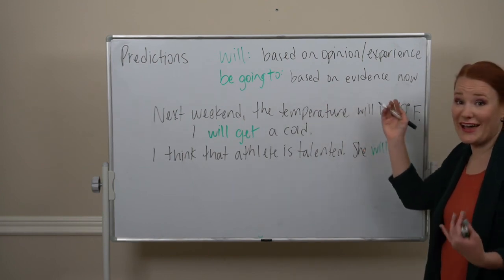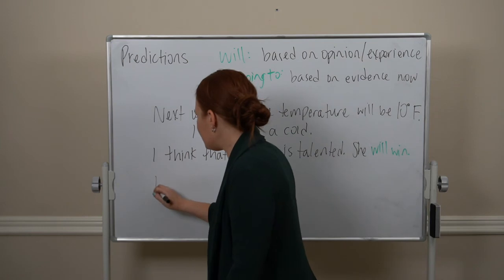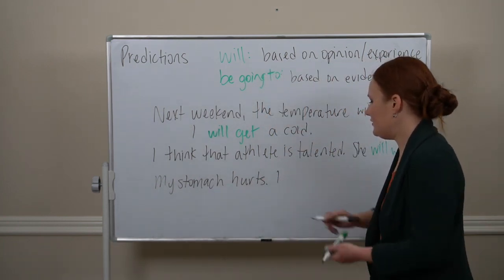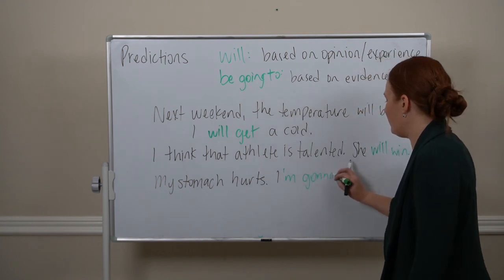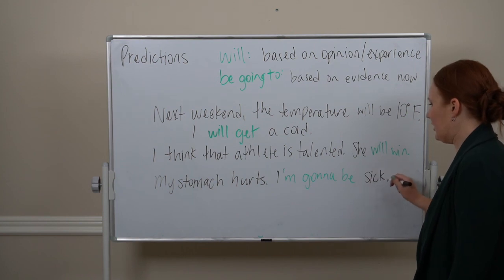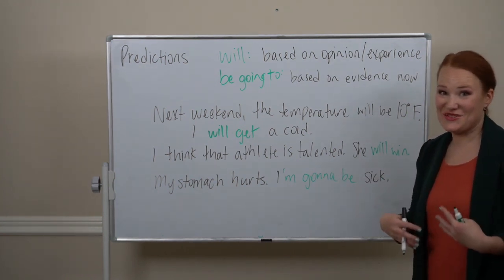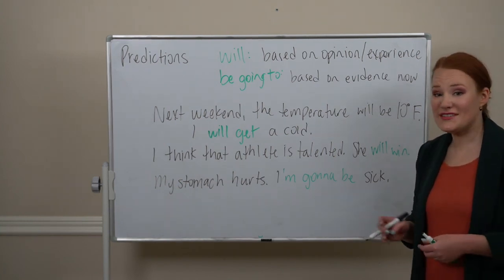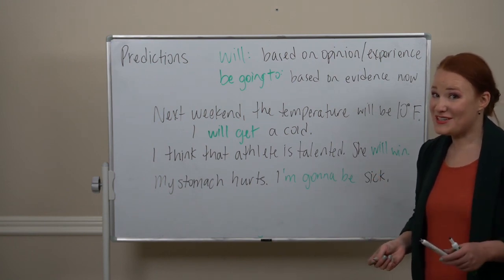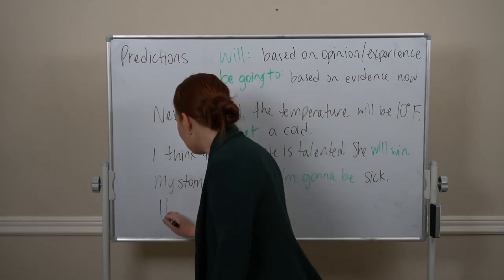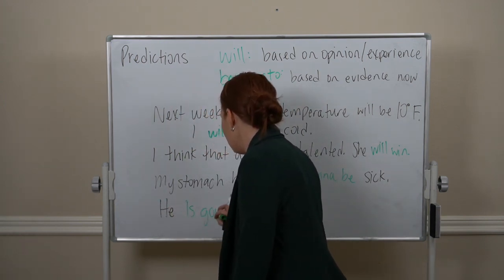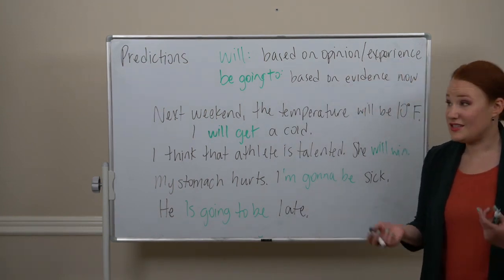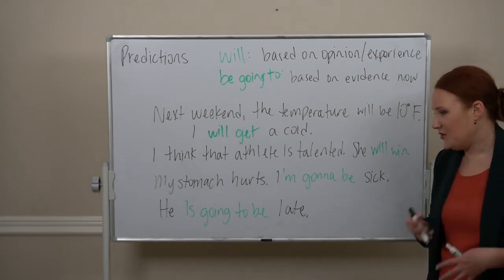On the other hand, 'be going to' is used for predictions based on evidence you can see right now. 'Oh, my stomach hurts — I'm going to be sick.' Or: 'The musician is supposed to start in five minutes but isn't here — he is going to be late.' You're using present evidence to support that prediction.